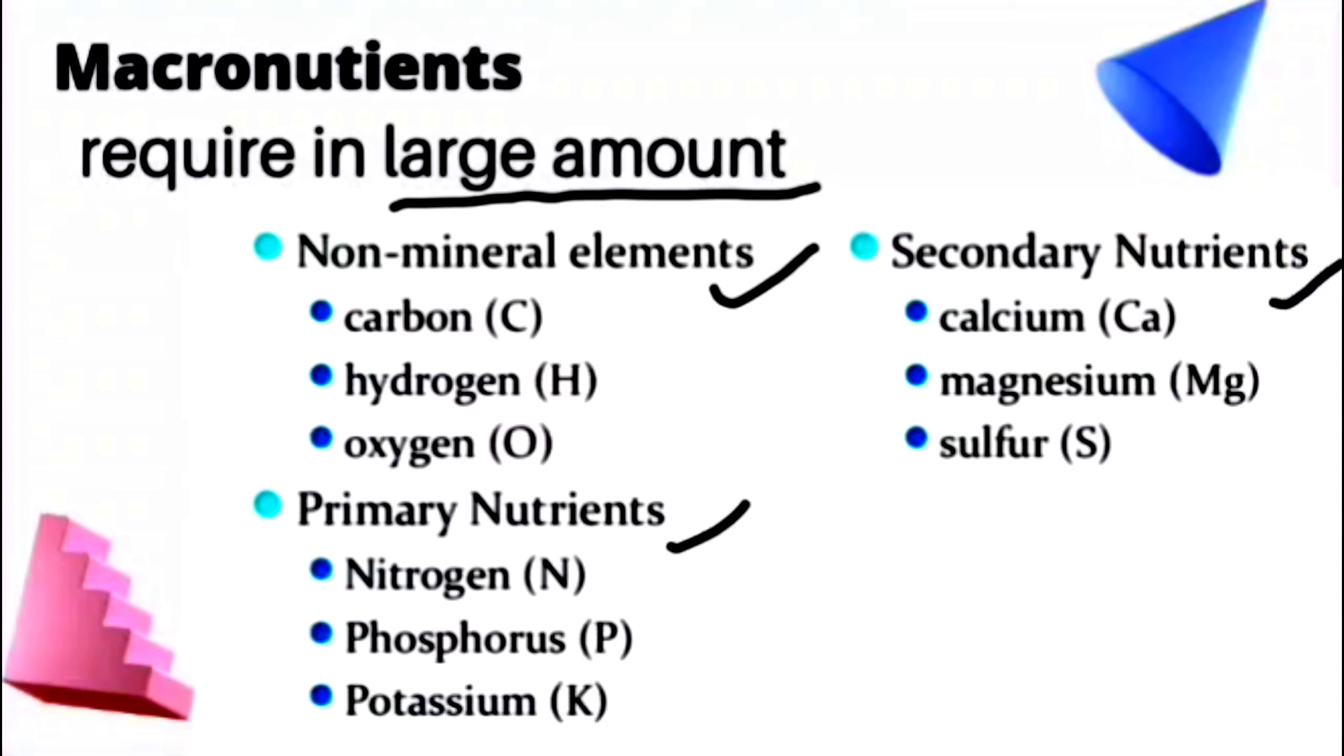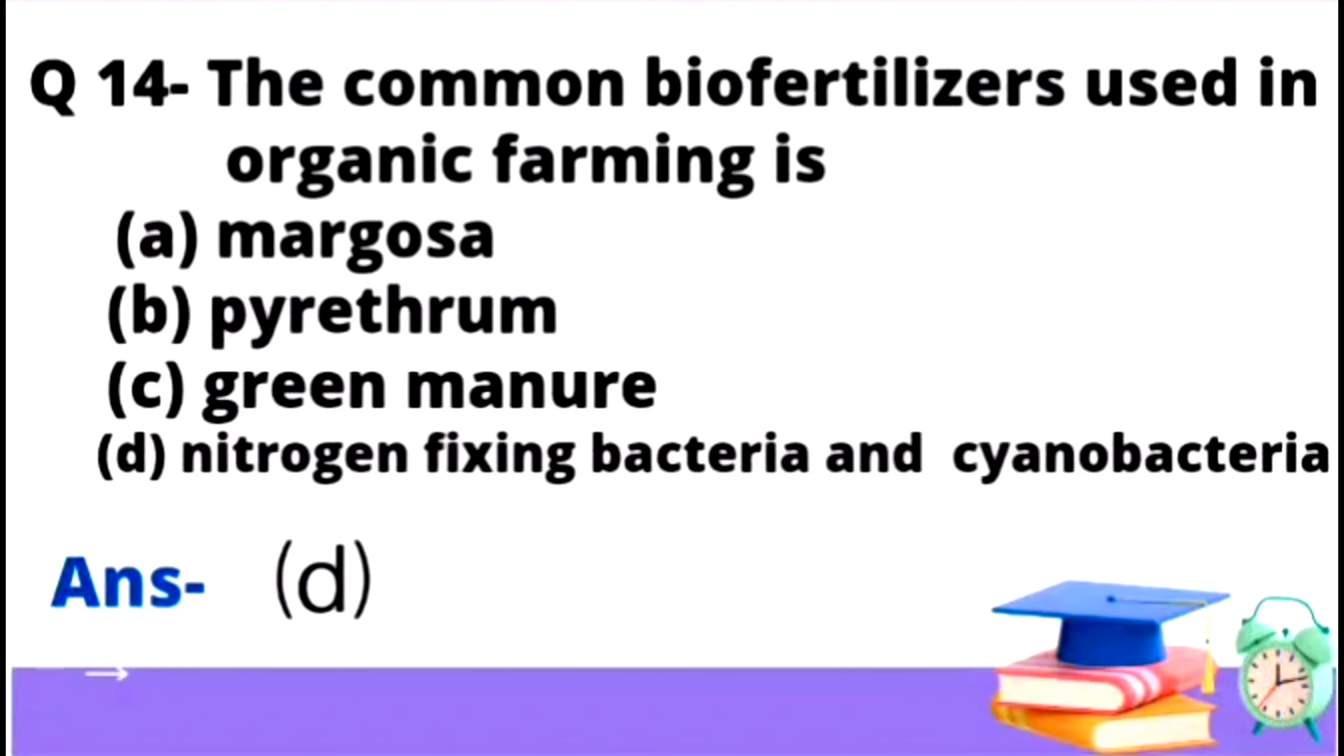Question number 14: The common biofertilizers used in organic farming are option D, nitrogen-fixing bacteria and cyanobacteria. So this will be the right answer.